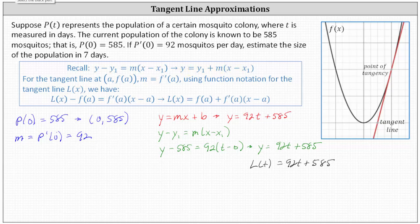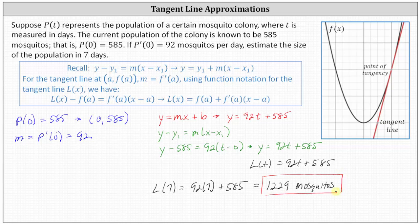So finally, to answer the question, to estimate the size of the population in seven days, we determine L of seven. L of seven is equal to 92 times seven plus 585, which is equal to 1229 mosquitoes. I hope you found this helpful.